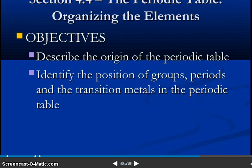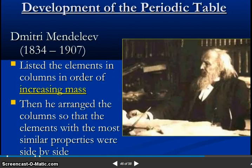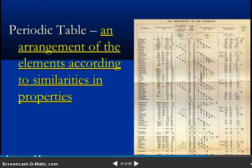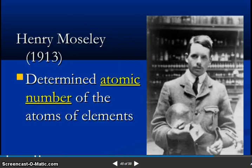So describe the origin of the periodic table. Identify the position of groups, periods, and transition metals in the periodic table. Dimitri Mendeleev listed the elements in columns in order of increasing atomic mass. You can see periodic table and arrangement of the elements according to similarities in properties.